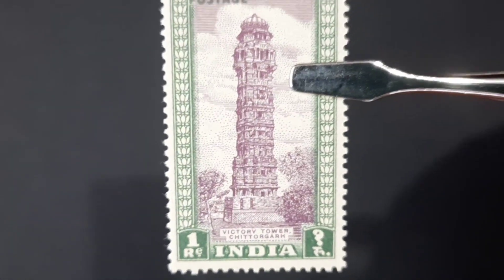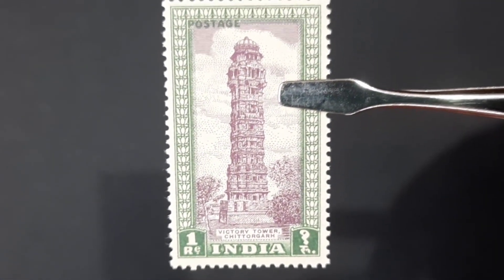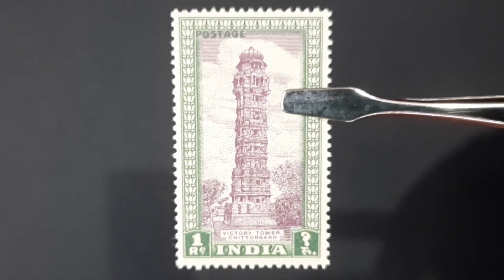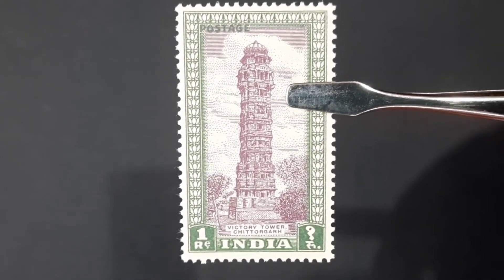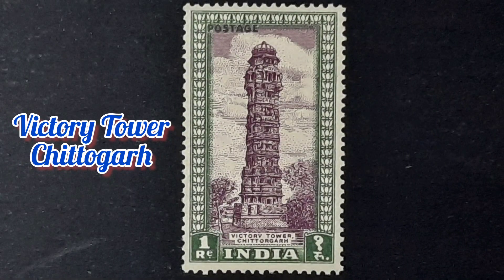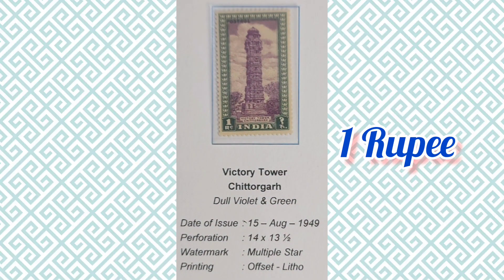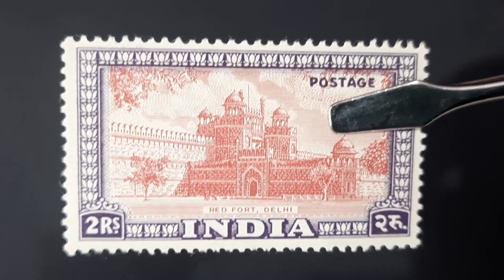The next stamp is the one rupee stamp. The image depicted here is the Vijay Stambha or Victory Tower, located within the Chittorgarh Fort, constructed by the Rajput king Rana Kumbha of Mewar in 1448 to commemorate his victory over the army of Malwa led by Mahmud Khalji. The tower is dedicated to the Hindu god Vishnu. The philatelic information about this stamp is furnished here.